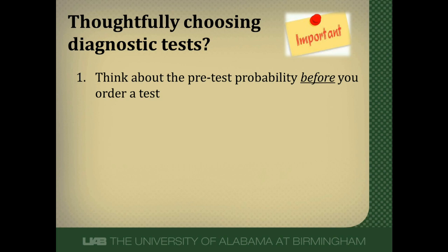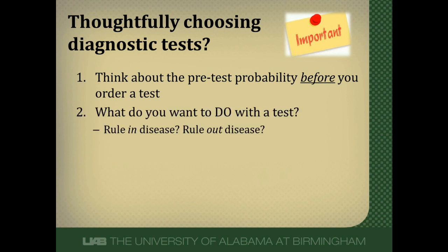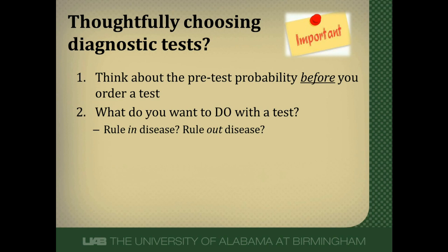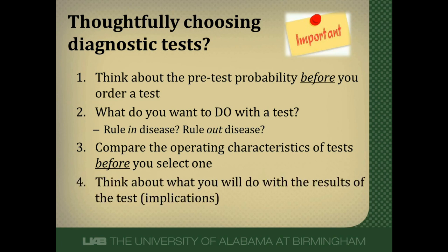We need to think about our pretest probability before we order a test. Many physicians order tests without really thinking about pretest probability and the role of testing in a patient. There are really only two roles of testing: to rule in disease or to rule out disease. Accurately determining pretest probability will help us decide which role applies. Third, we need to think about the operating characteristics of our test — sensitivity, specificity, and likelihood ratios — before we choose one. Finally, we need to consider what we're going to do with the results. If ordering a test makes no difference in the treatment you're going to provide, there's no point in ordering it.